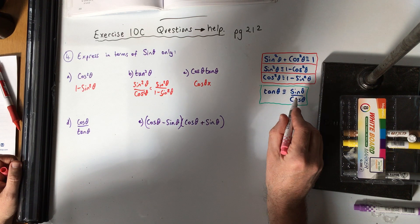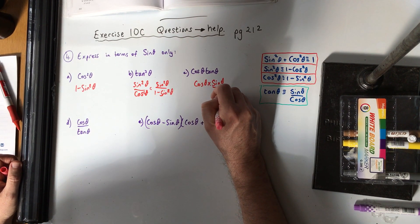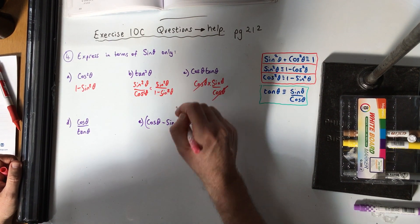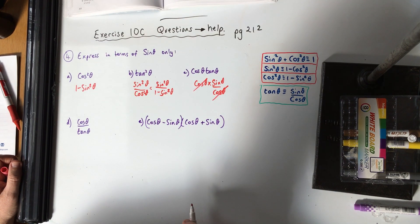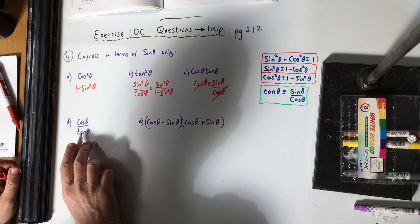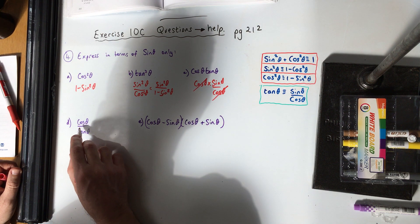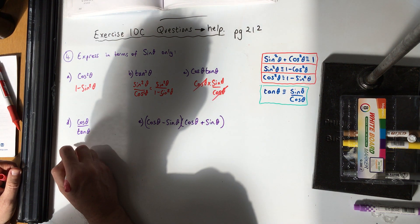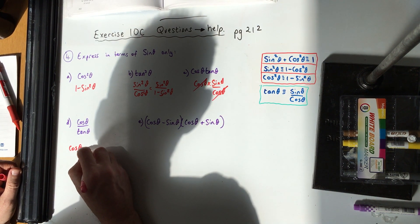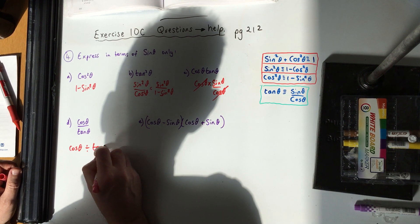For cos theta times tan: that's cos times sine over cos, and they cancel each other out, leaving just sine theta.